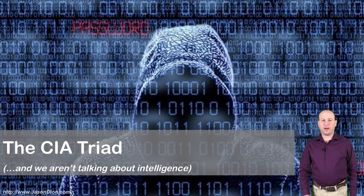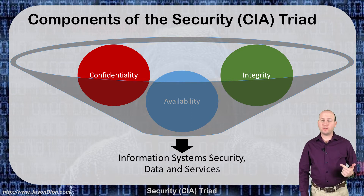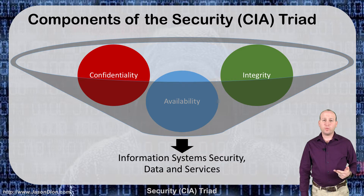The CIA triad — and we're not talking about intelligence. When we talk about the CIA triad in cybersecurity, we're talking about confidentiality, integrity, and availability. These three things make up the core of defense of our networks. If we can guarantee the confidentiality, integrity, and security of our networks, we will have a secure network to operate in.